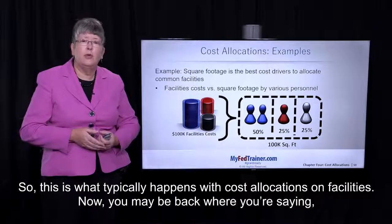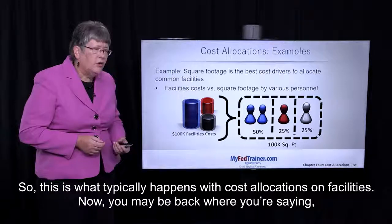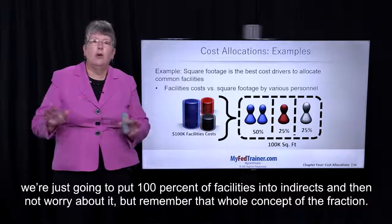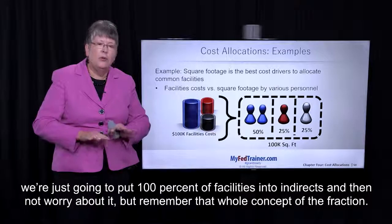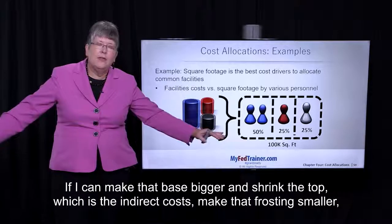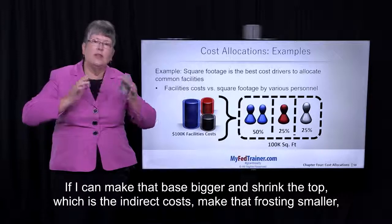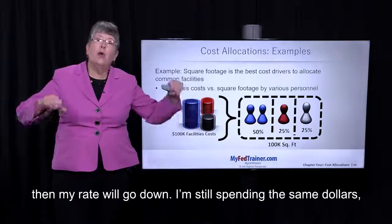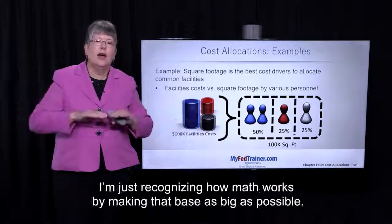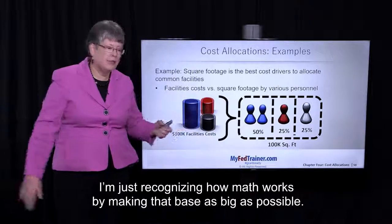That seems like a fairly logical and fair way to do it. This is what typically happens with cost allocations on facilities. Now, you may be saying we're just going to put 100% of facilities into indirects and not worry about it. But remember that whole concept of the fraction — if I can make that base bigger and shrink the top, which is the indirect cost, make that frosting smaller, then my rate will go down. I'm still spending the same dollars; I'm just recognizing how math works by making that base as big as possible.